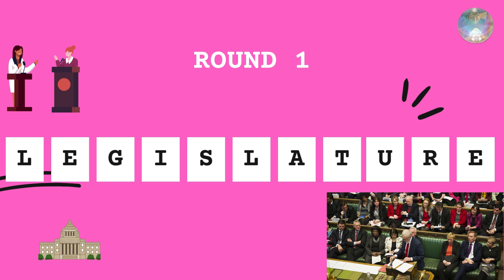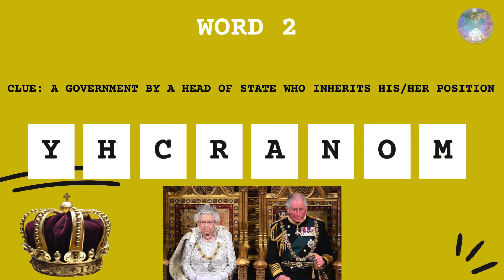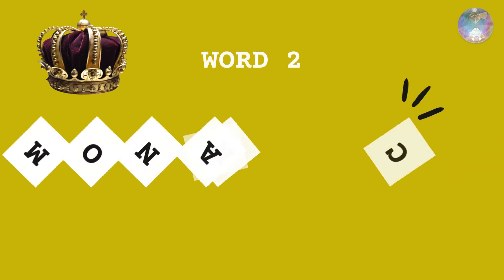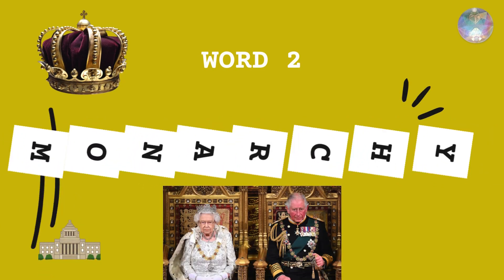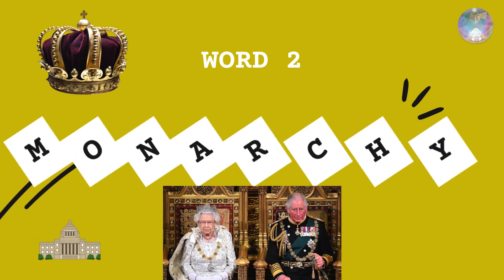Word number two. This is a government by a head of state who inherits his or her position. There's usually a king or a queen in this type of government. Yes, you guessed it — monarchy.